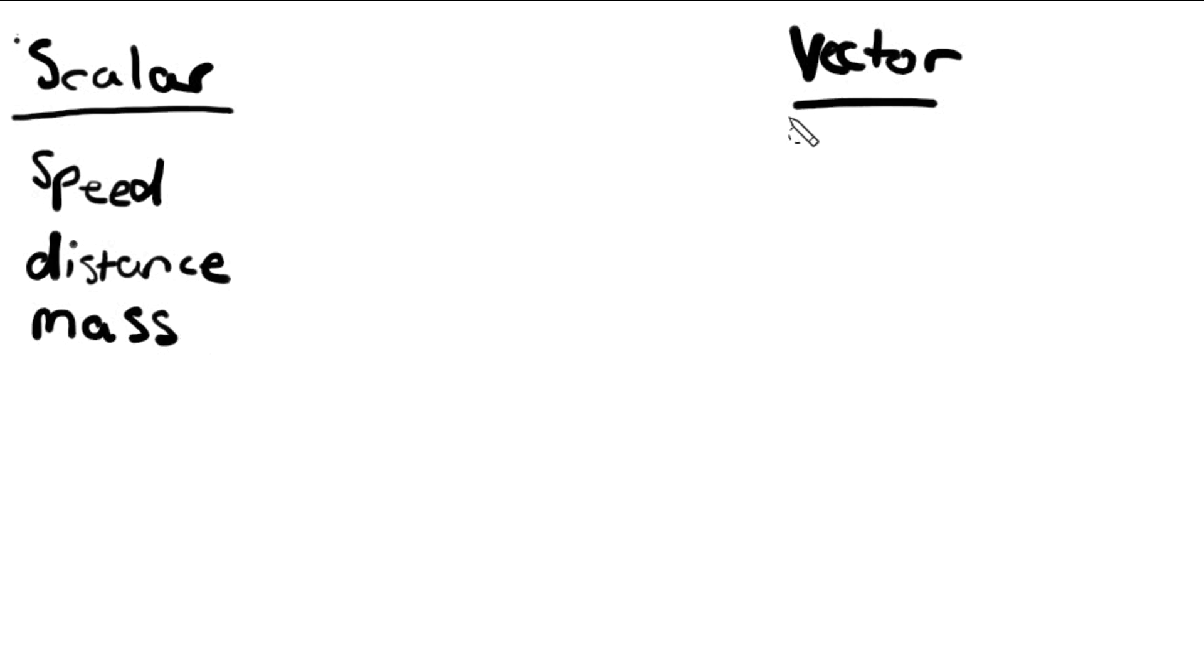A vector, on the other hand, would be velocity, the cousin of speed. Displacement, the cousin of distance. And then, of course, weight, which is the cousin, the older cousin of mass.